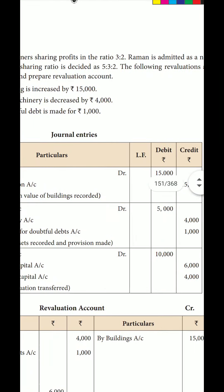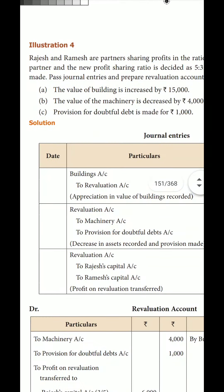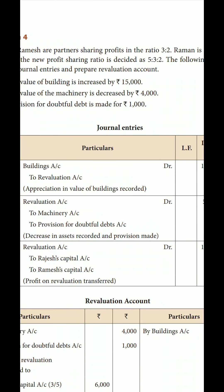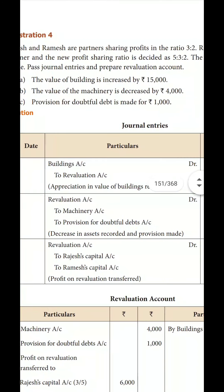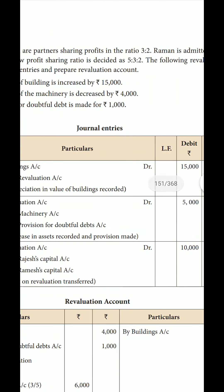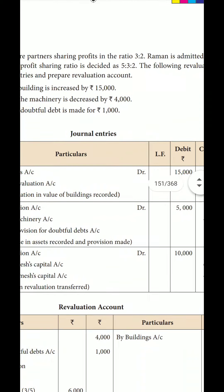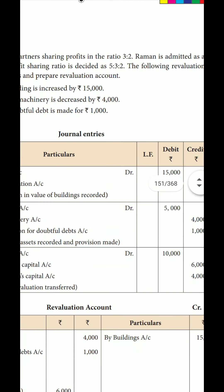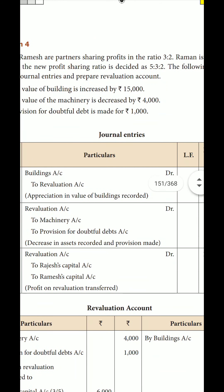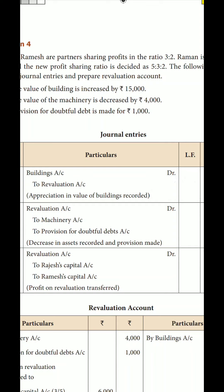Roman is admitted as a new partner, and the new profit sharing ratio is decided as 5 is to 3 is to 2. Rogers and Ramay are the old partners sharing in the old ratio of 3 is to 2. Roman is the newly admitted partner. The new ratio going forward is 5 is to 3 is to 2.